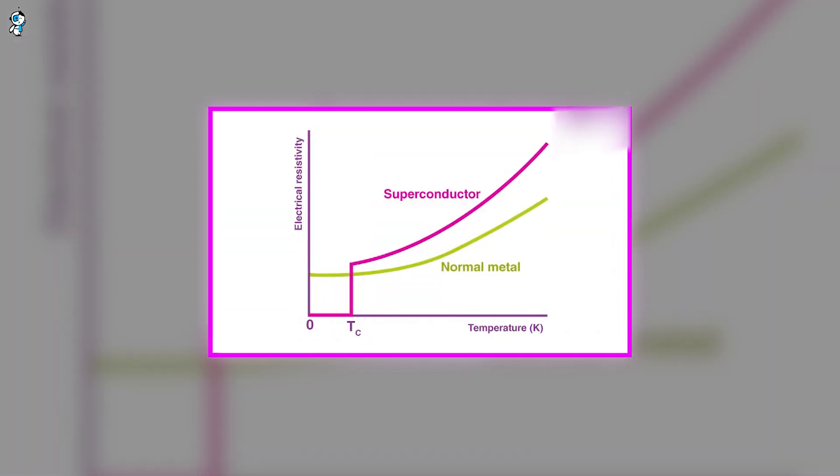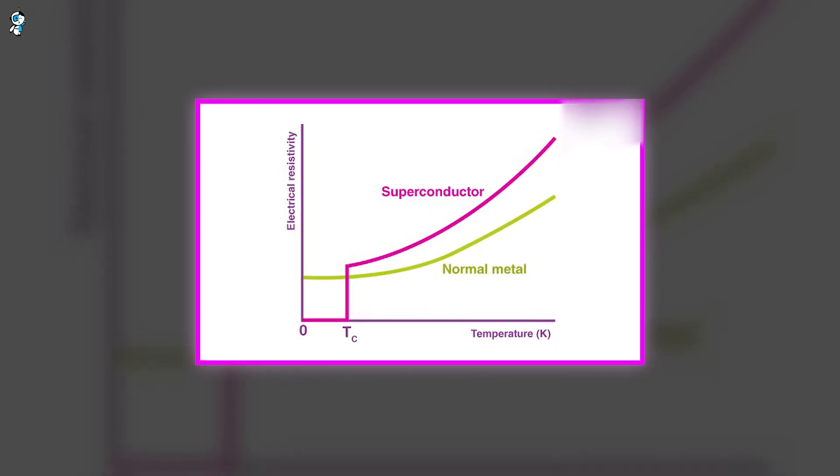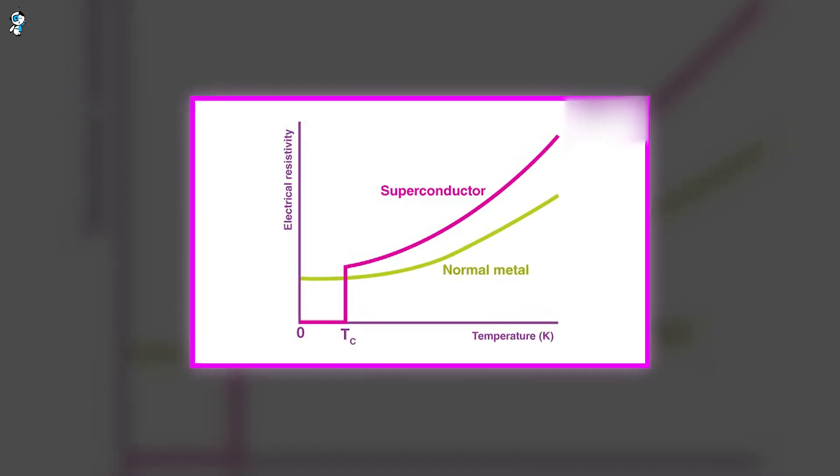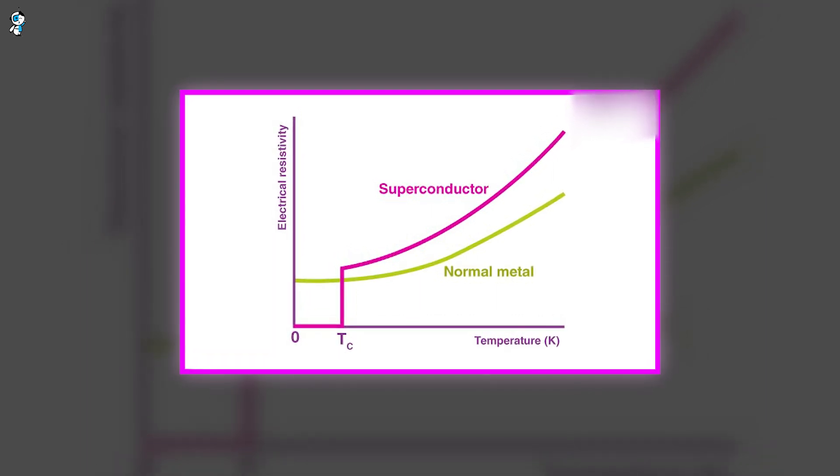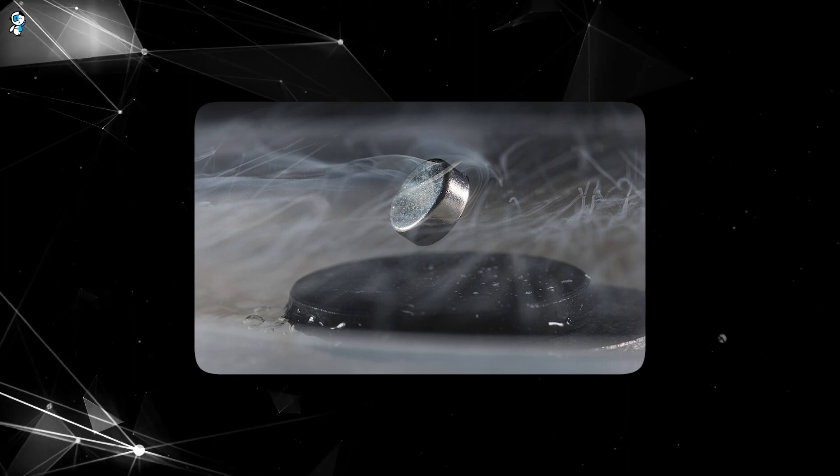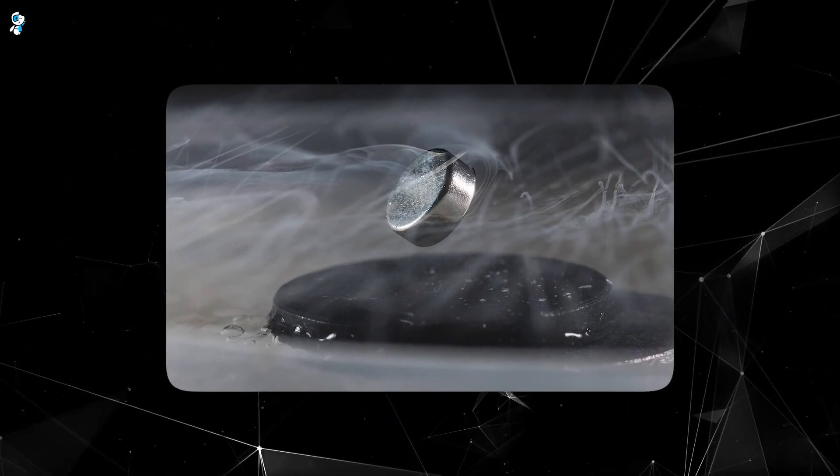In short, superconductors are materials that conduct electricity with zero resistance when cooled below a certain temperature. This gives them the unique ability to transmit huge electrical currents without losing any energy as heat. The lower the operating temperature needed, the more challenging and expensive superconductors are to practically utilise.